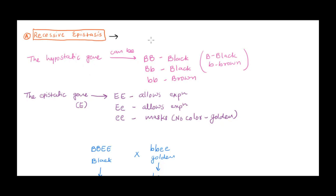We will have a hypostatic gene and an epistatic gene. Let's assume pigmentation in Labradors is coded by gene B. The dominant allele B codes for black and the recessive allele b codes for brown. So possible combinations are either homozygous dominant or heterozygous dominant, giving black pigmentation, or homozygous recessive, giving brown color pigmentation. That is what happens normally.